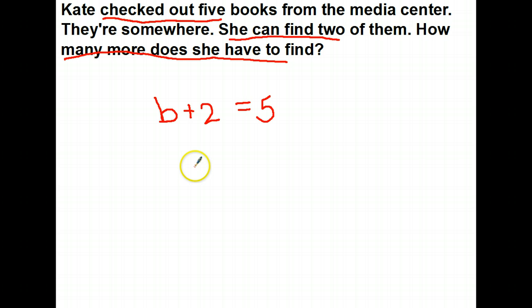So to answer this, we will take the 5 books she checked out altogether, take away the 2 books she can find. She should still need to find 3 more books. Let's plug it back in. Is 3 plus 2 equals 5 a true statement? Yep, so the number of books she needs to find is 3.